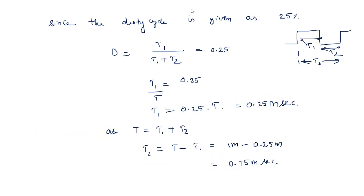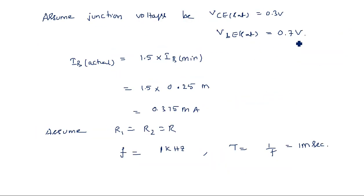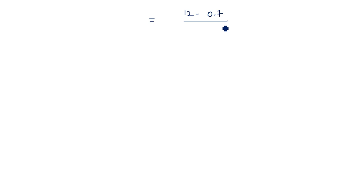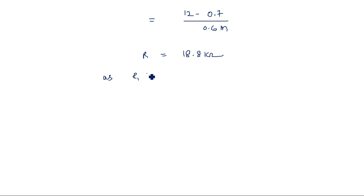Substituting values: R = (12 − 0.7) / 0.375 mA = 11.3 / 0.375 mA ≈ 18.8 kilohms. Therefore R1 = R2 = R = 18.8 kilohms.